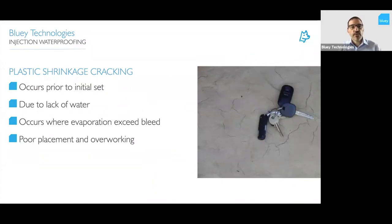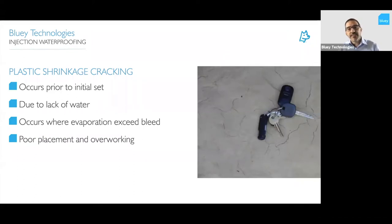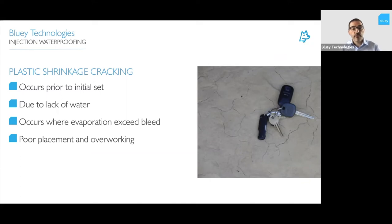Plastic shrinkage cracking is also a dormant or dead crack. It occurs prior to the initial set, usually due to a lack of water — the evaporation rate of moisture from the concrete is faster than the bleed rate, so the surface dries out before moisture can evaporate through. It's less common in Singapore because of high humidity, but in very dry environments, like parts of southern Australia, evaporation with a little crosswind can be very fast. It can also occur because of poor placement and overworking. These are dead cracks.